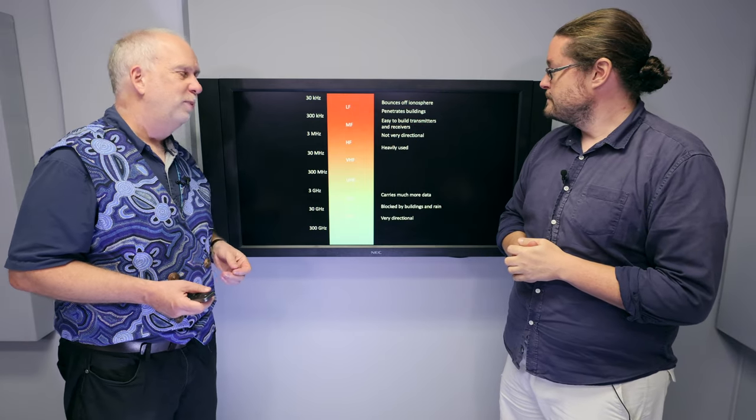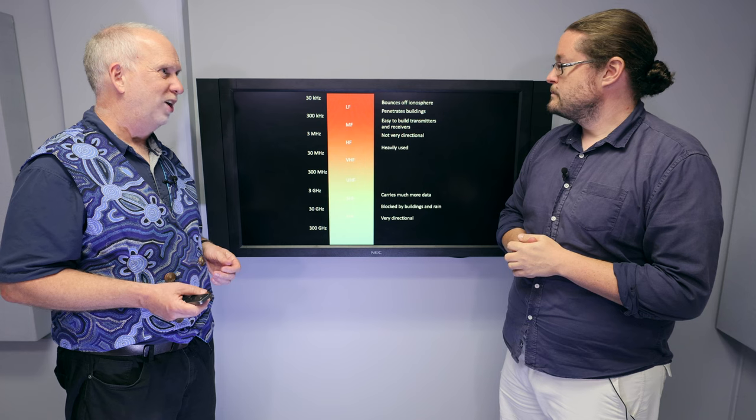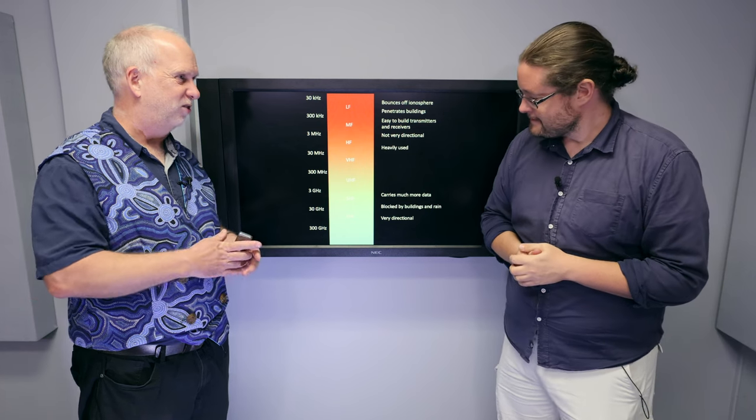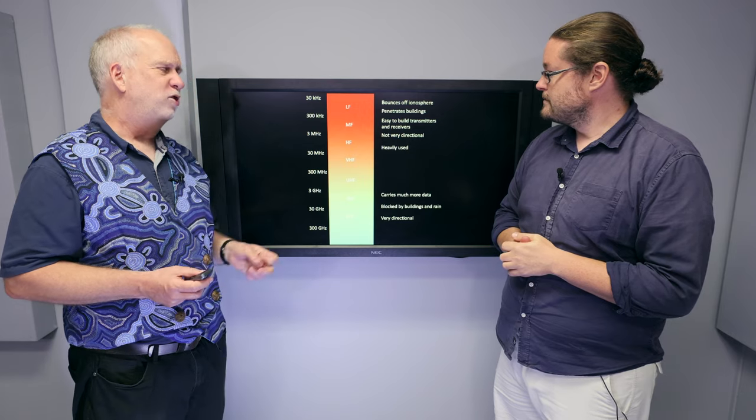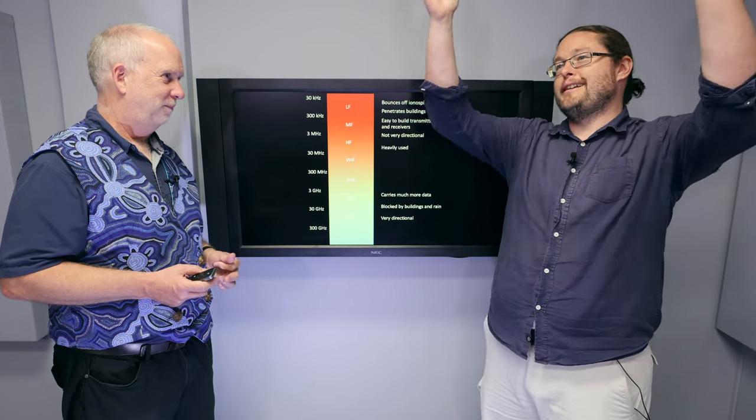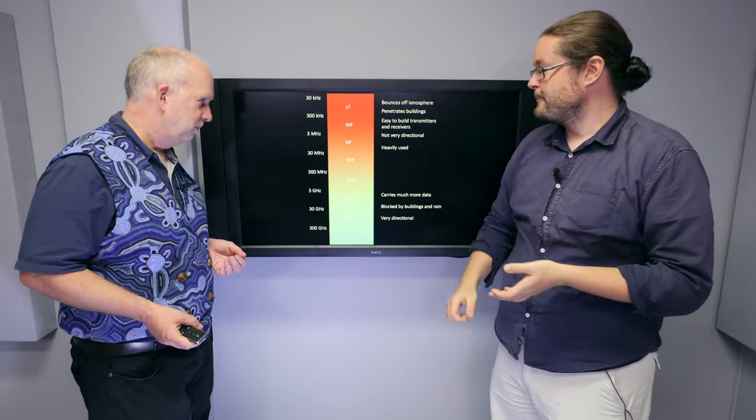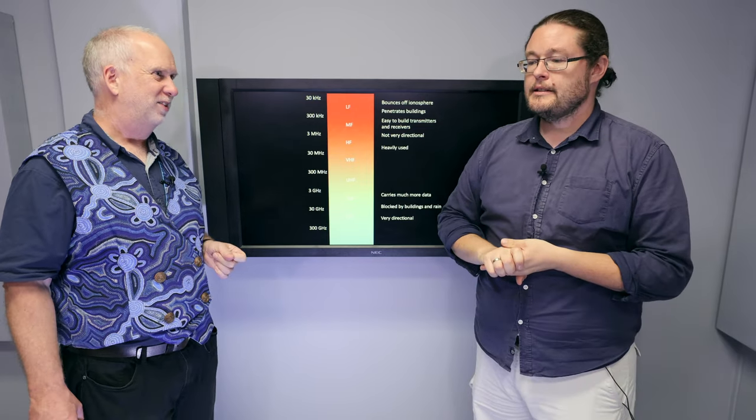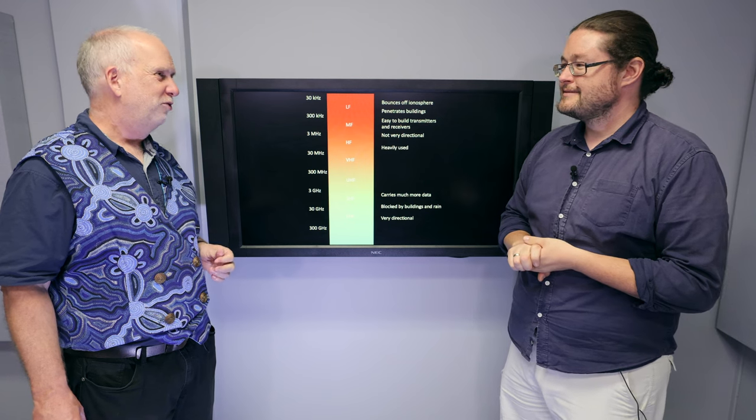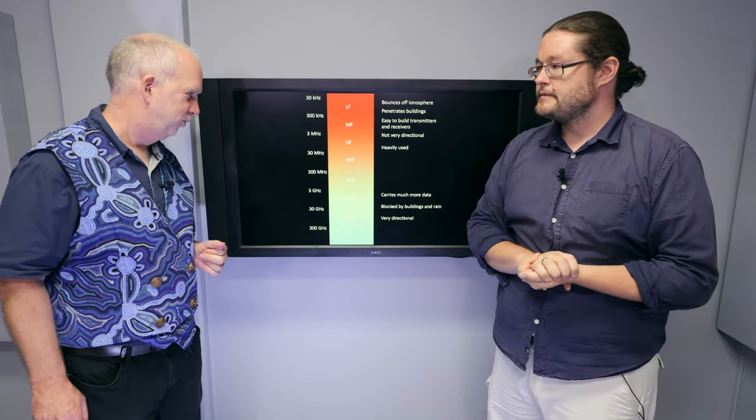It's very easy to build transmitters and receivers. I mean, this is what the school science kits do. They build these low frequency things. It's just easy to connect components. It's not very directional. Yeah, I guess you just send it up and it goes off in all directions. And the other trouble is it's very heavily used. All the different bits of the wavelength are already booked by somebody. So there's not going to be any spare frequencies for use for anything else.